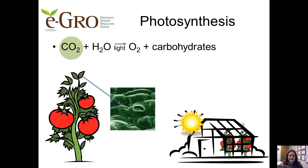The first input into photosynthesis is carbon dioxide, which is a gas at about 400 parts per million concentration in the air. It enters the plant through the stomata, or pores through which gases and water vapor move into and out of the plant. Stomata are mostly on leaf undersides, like the stomata on a tomato leaf that you see here. Plants have enzymes that fix this carbon so that it can be used in photosynthetic reactions. Grower action can influence carbon dioxide concentrations.